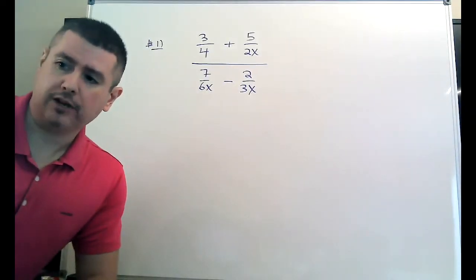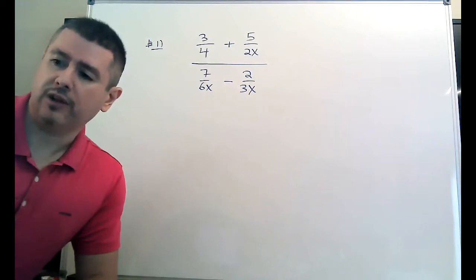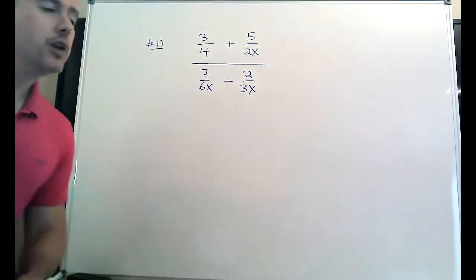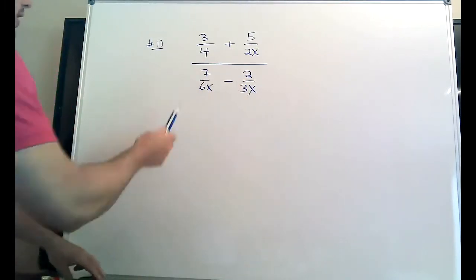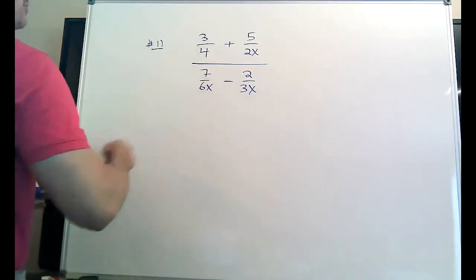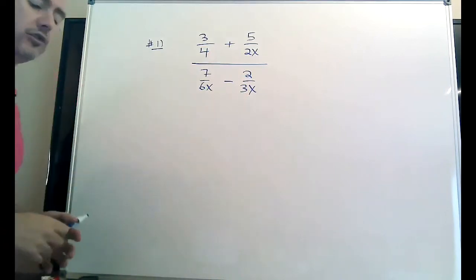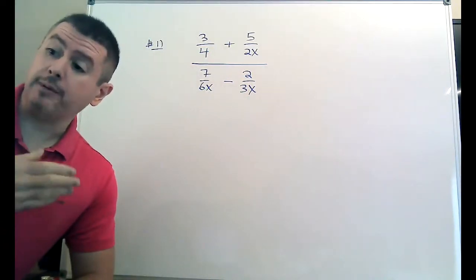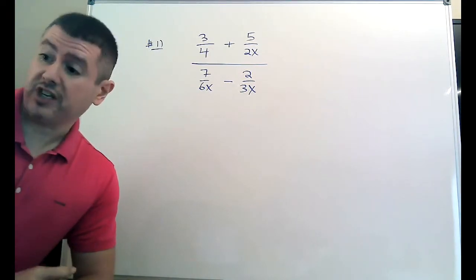The first complex fraction problem is similar to the ones I worked on the board in class, and they're in the class notes. So the first thing is to figure out what to put on the tops. You have two, four, and you have three, six. So you're looking for the least common multiple of all those numbers.